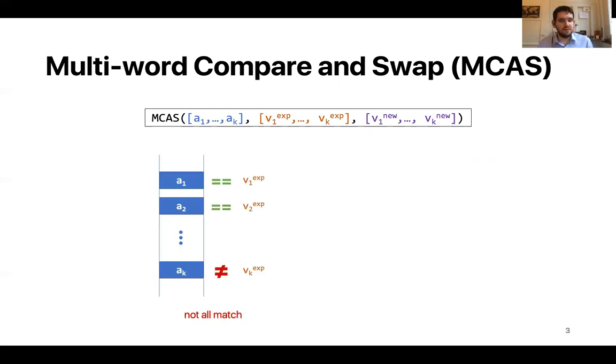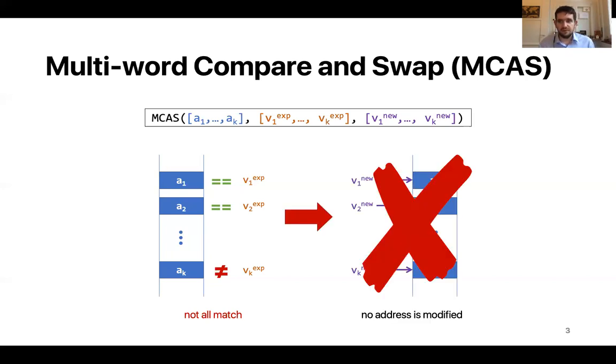If, however, one or more of the addresses do not match their expected values, then MCAS does nothing so no address is modified.